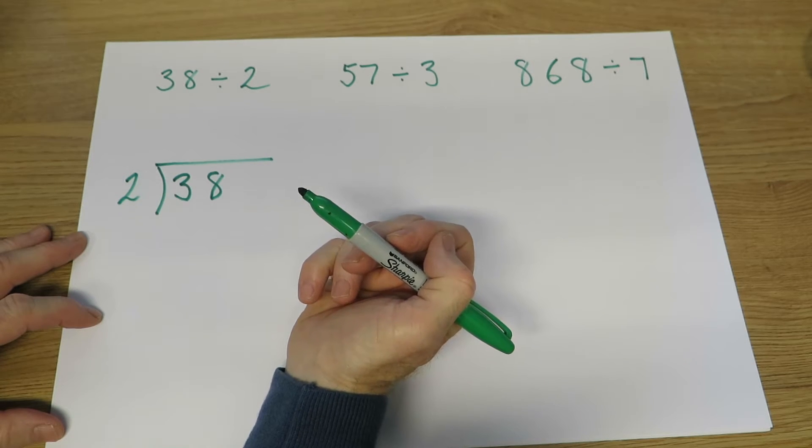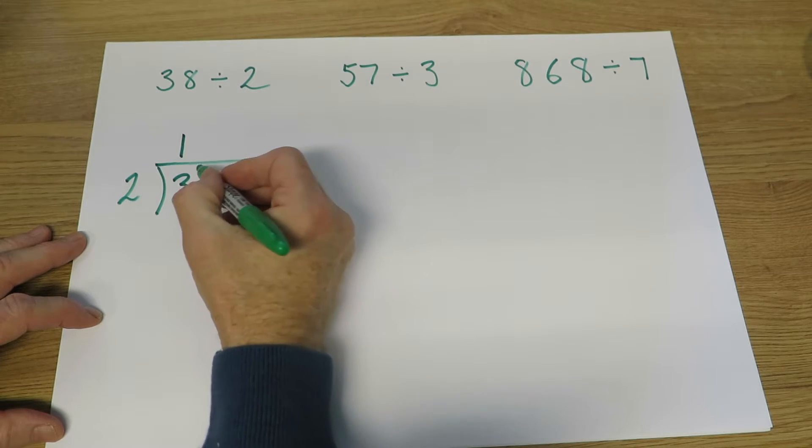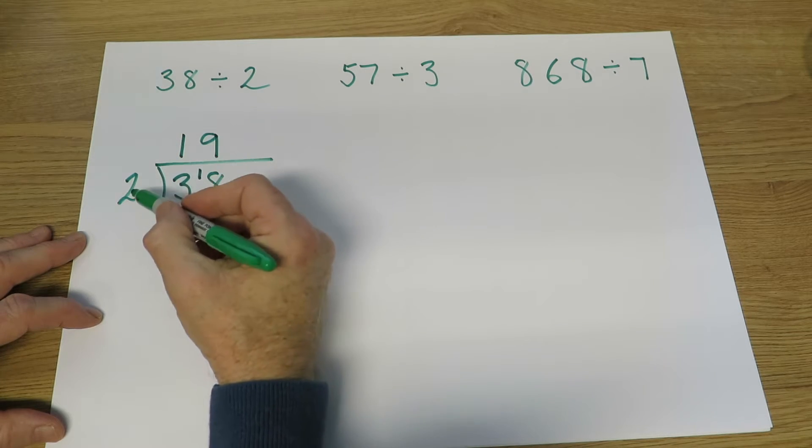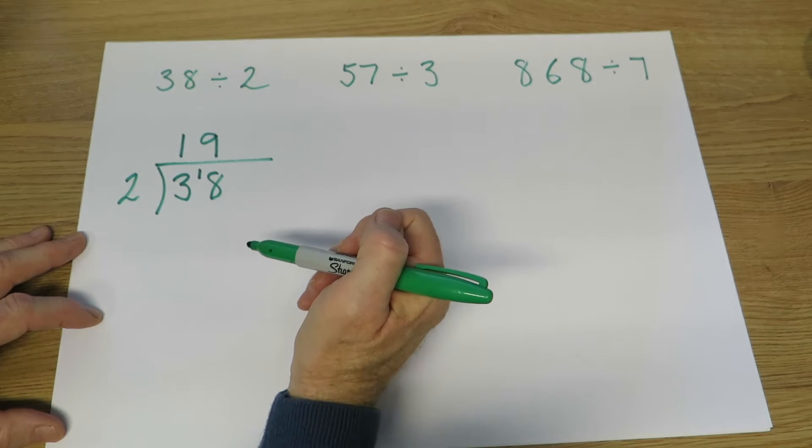We say, how many twos are there in three? Well, there's one two in three, and there's one left over. How many twos in 18? There are nine. So 38 divided by two gives us 19.